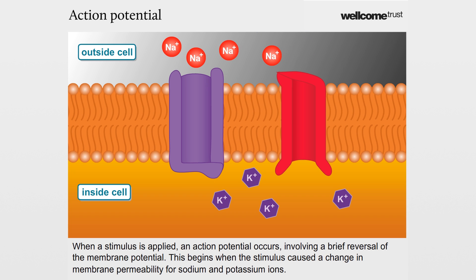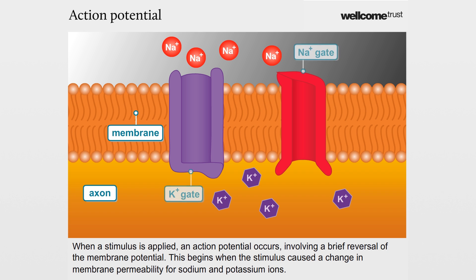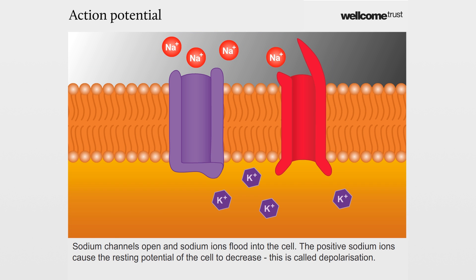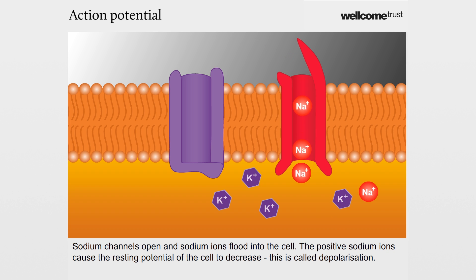When a stimulus is applied, an action potential occurs involving a brief reversal of the membrane potential. This begins when the stimulus causes a change in membrane permeability for sodium and potassium ions. Sodium channels open and sodium ions flood into the cell. The positive sodium ions cause the resting potential of the cell to decrease. This is called depolarisation.